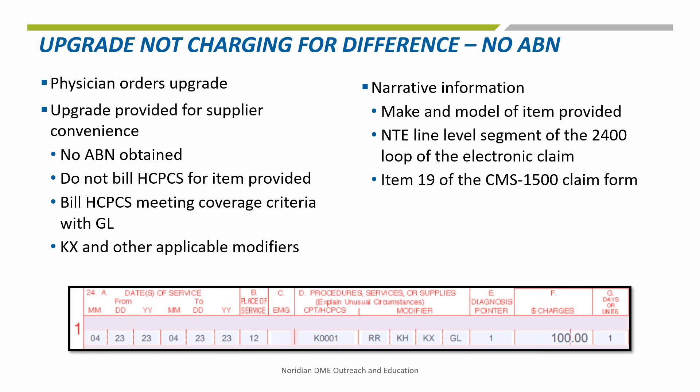In this common example, the physician orders the upgrade — commonly a lightweight wheelchair — but the beneficiary does not meet coverage criteria, and the supplier is providing the upgrade chair at no charge to the beneficiary. Another example of this scenario is when the upgrade is provided for supplier convenience because the supplier carries the upgrade chair as their standard stock but will not be billing the beneficiary. In either of these scenarios, there will not be a charge to the beneficiary and no ABN will be obtained. When billing, suppliers will only bill the HCPCS code for the item that meets coverage criteria with a GL modifier and any other appropriate modifiers per the manual wheelchair policy. The make and model of the item that is actually provided is not billed but is listed in the narrative of the claim.